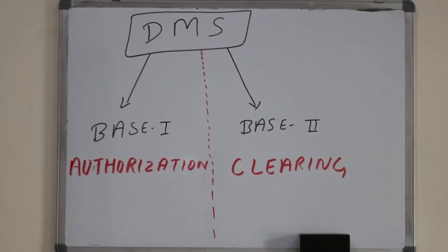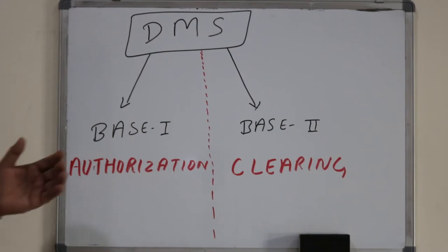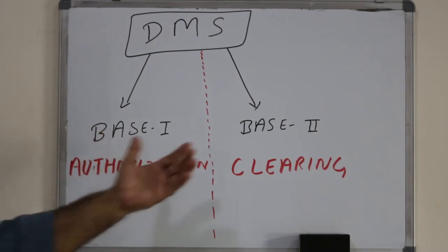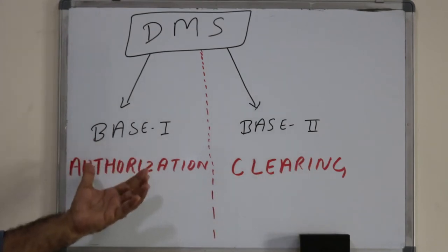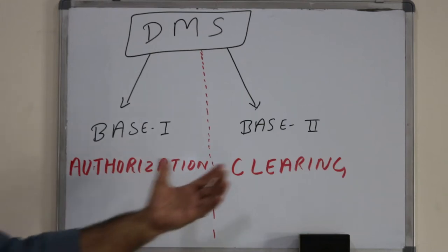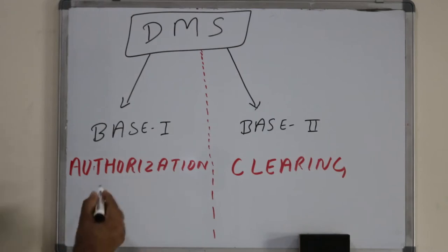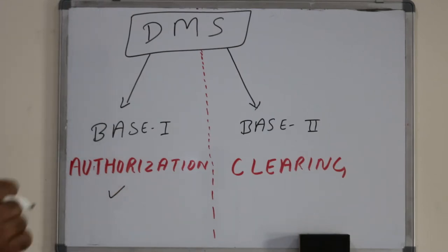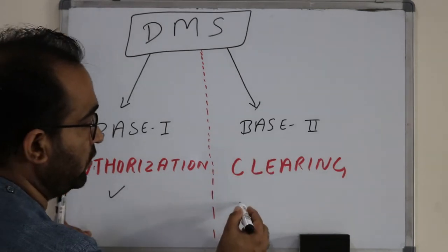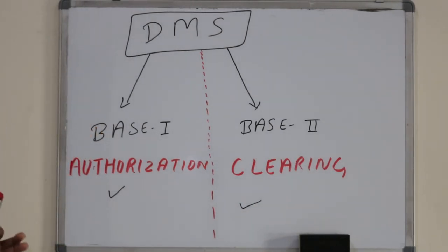In today's session we will only discuss the Dual Message System. As the name implies, there are two different legs — I'll call them Base 1 and Base 2. Base 1 is the authorization, and Base 2 is the clearing. This is similar to what we've seen between the POS and acquiring bank: first we do authorization, then the merchant closes the batch and does reconciliation. That second step — reconciliation — is similar to clearing.